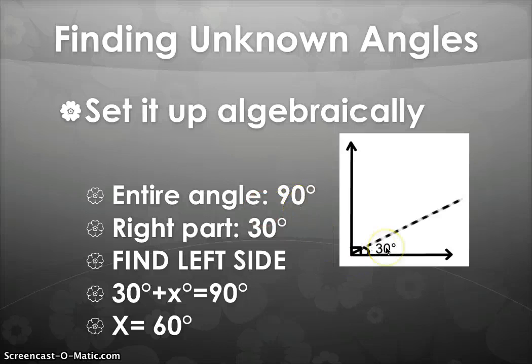They give you this part, which is 30, and then this part, the X that you don't know, the unknown, you can just call it X, and you want to find the left side. So you set it up 30 degrees plus X equals 90 degrees. And then when you subtract 30 from both sides, you're left with X equaling 60 degrees. And that's your answer.